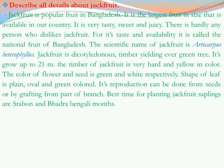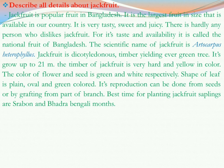Its reproduction can be done by two processes. One is from seed and another is from grafting — that is, from a part of a branch. The best time for planting jackfruit saplings is Srabbho and Bhadro, which is the season currently ongoing.